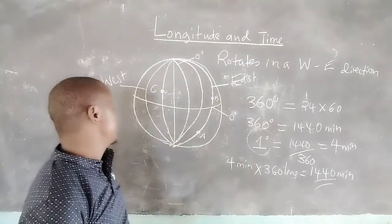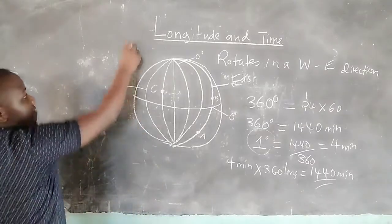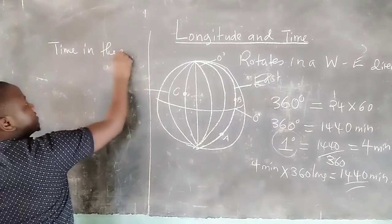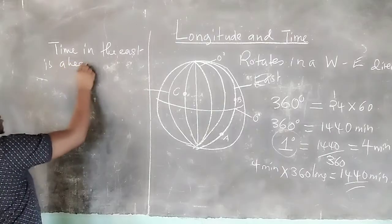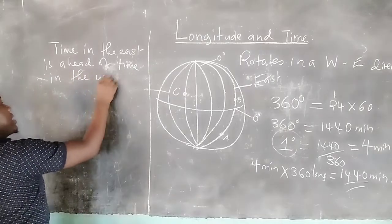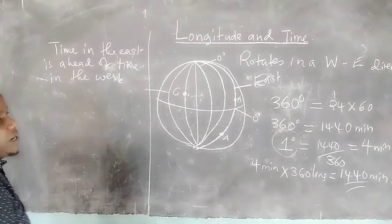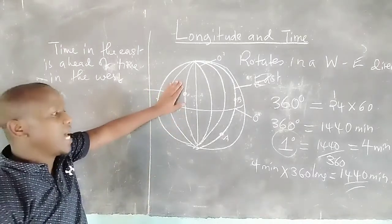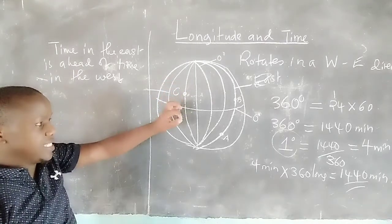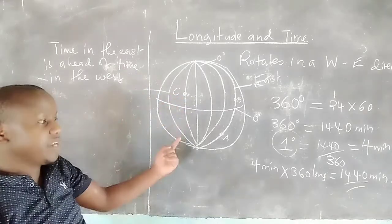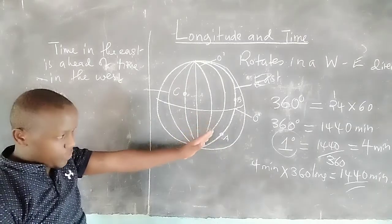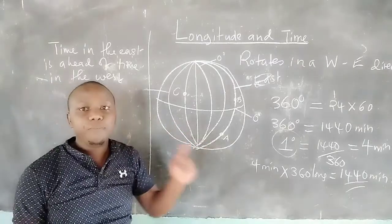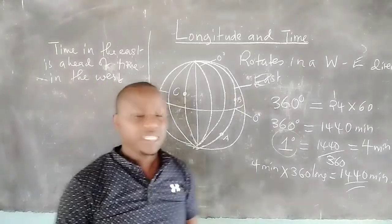For every one degree difference in longitudes, there is a 4-minute difference in time. Time in the east is ahead of time in the west. Given time in the east, to calculate time in the west, we take the time difference. We first calculate the longitude difference, then multiply by 4 minutes per degree to get the time difference. After knowing the time difference, we either add or subtract depending on the position of a place relative to the place whose time is known.